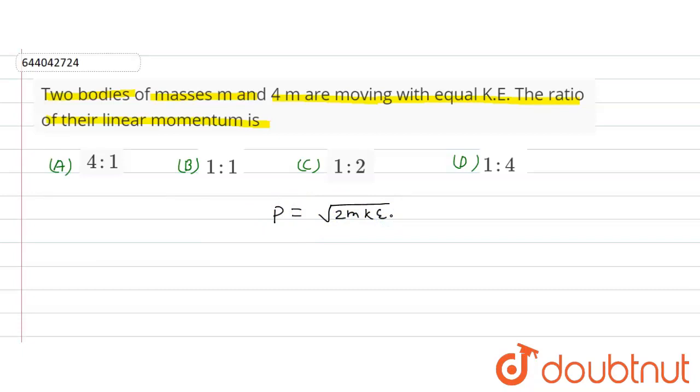So here we have to find the ratio of linear momentum, so p₁ over p₂ will be how much? Kinetic energy is the same, and 2 is constant, so this will be m₁ over m₂.